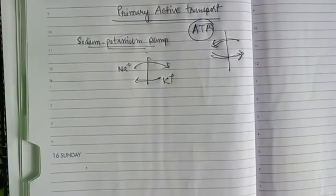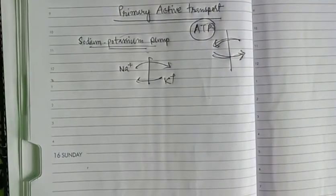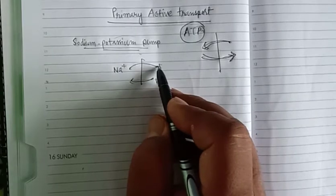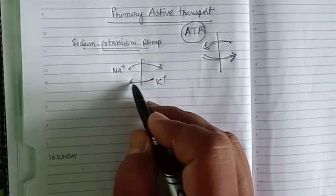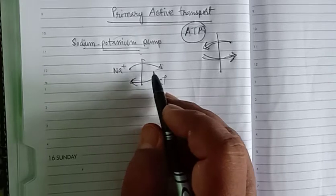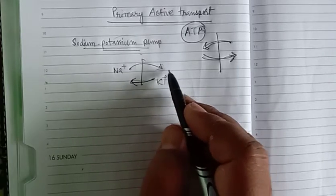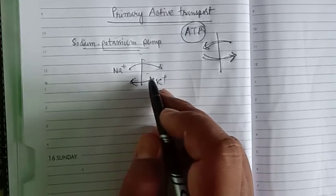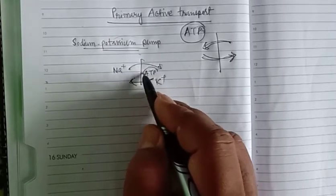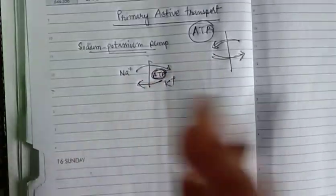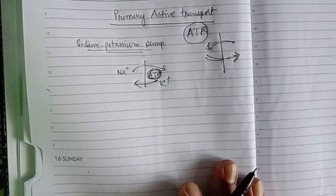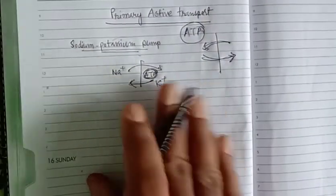The sodium-potassium pump moves sodium out of the cell while moving potassium inside. The hydrolysis of ATP gives the cell the energy it needs during this process.